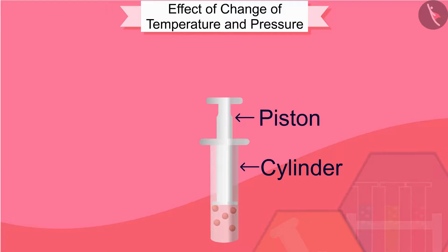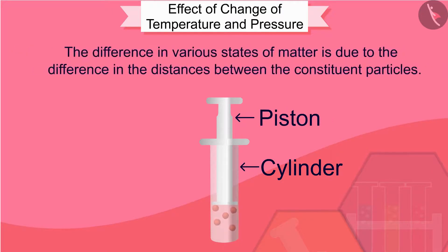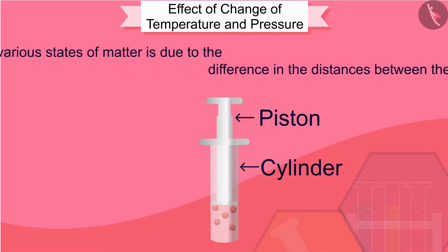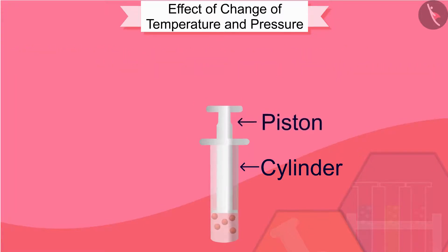We have already learned that the difference in various states of matter is due to the difference in the distances between the constituent particles. Therefore, you will see that on increasing pressure and compression, the gas particles come closer. If we keep increasing the pressure, this gas will be converted into liquid.